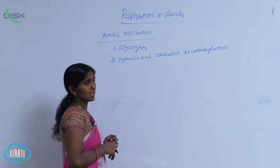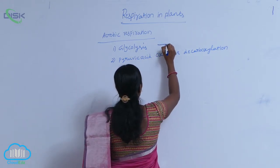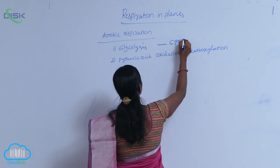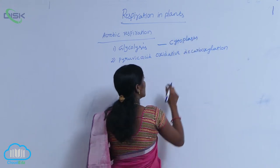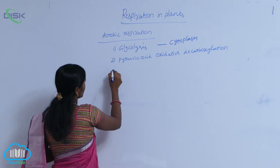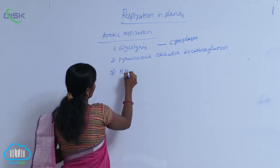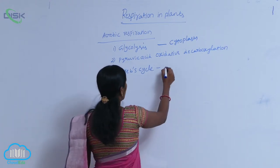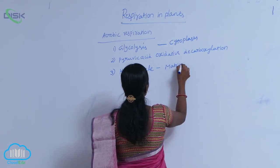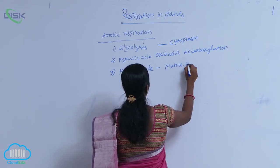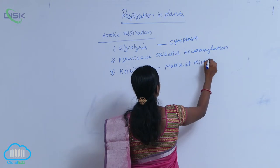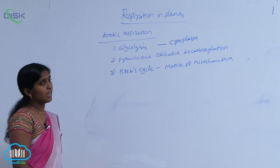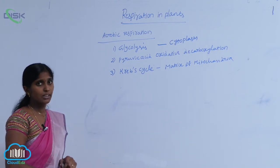Where does glycolysis take place? Glycolysis occurs at the cytoplasm. The Krebs cycle occurs in the matrix of mitochondria. So between the Krebs cycle and glycolysis there is an intermediate reaction.